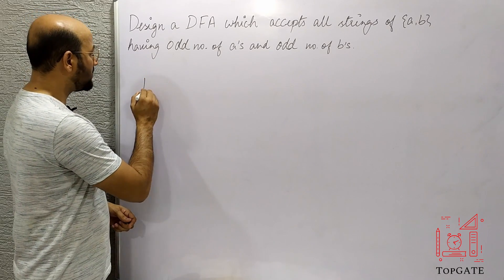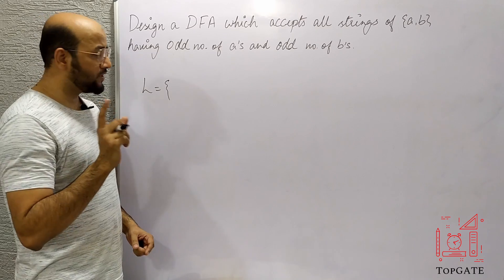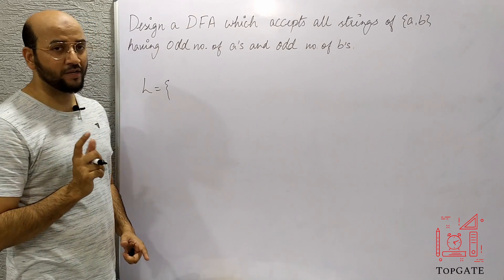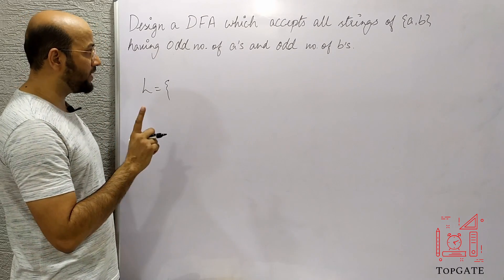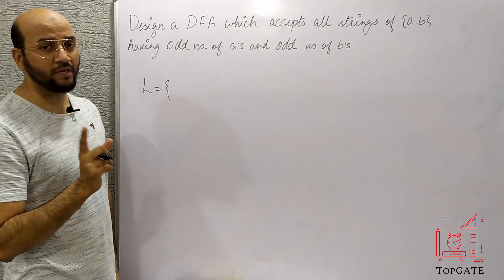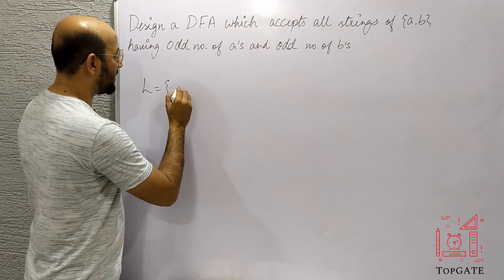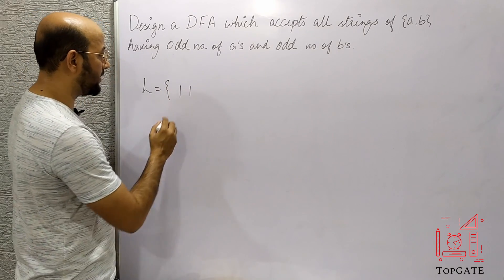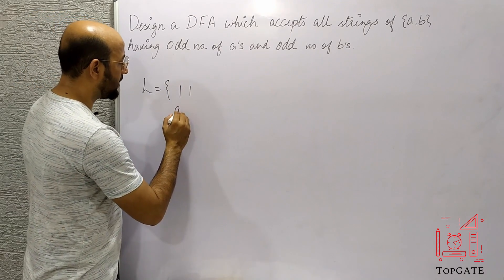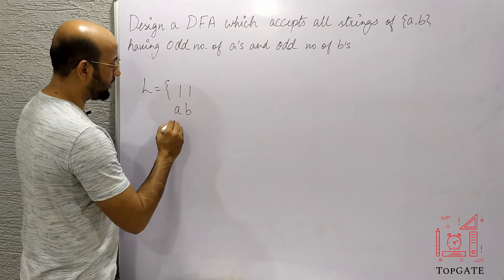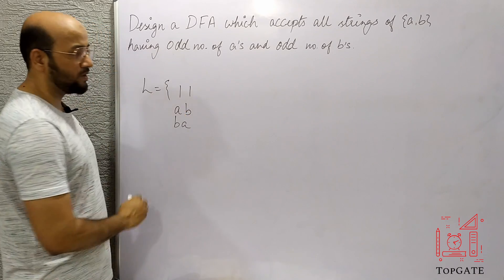The minimum string in this case will be: the first odd number is 1, so we should have at least 1 A and 1 B in the string. So if we take A as 1 and B as 1, then the string will be either AB or BA.